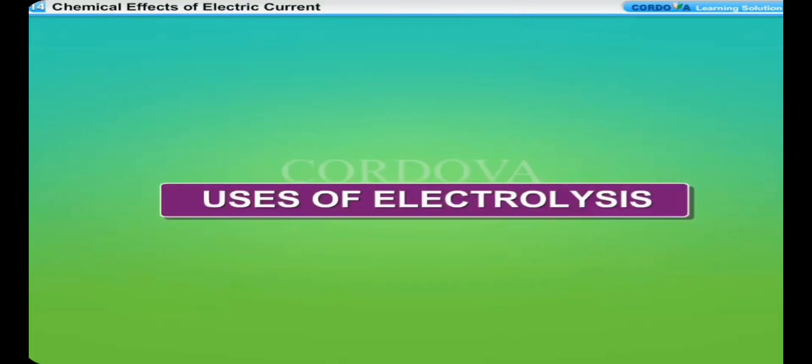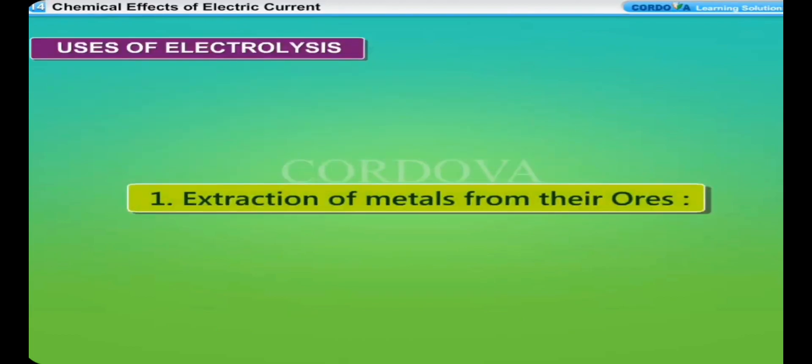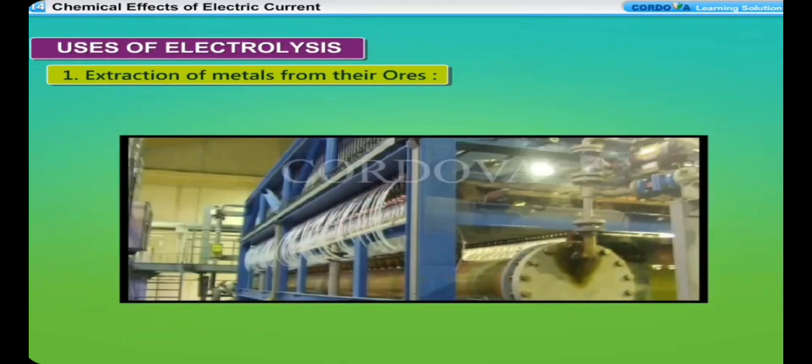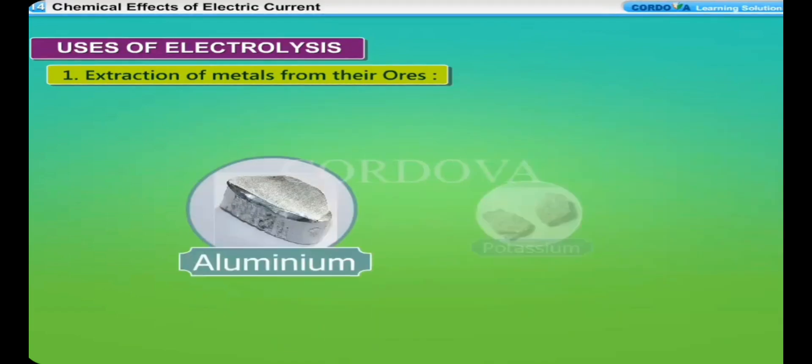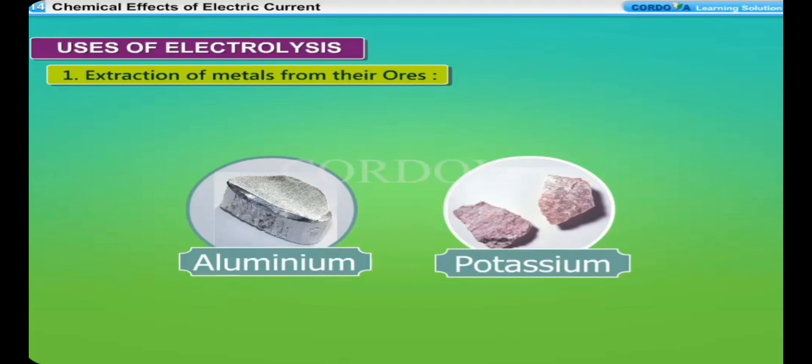Uses of electrolysis: Extraction of metals from their ores. Electrolysis is used in the extraction of metals from their ores. For example, when a current is passed through molten sodium chloride, sodium is deposited at the cathode and chlorine gas is evolved at the anode. Aluminium and potassium are also extracted from their ores by electrolysis.